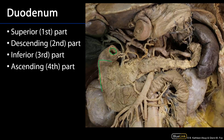The second part of the duodenum is also known as the descending part. It moves from approximately the L1 level down to the L3 level. It's here in the second part that we'll have both the minor and the major duodenal papillae, which are going to drain the biliary tree as well as the main pancreatic duct through the major, and the accessory pancreatic duct through the minor. This second part has circular folds and is secondarily retroperitoneal.